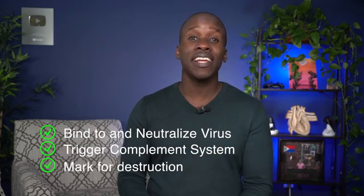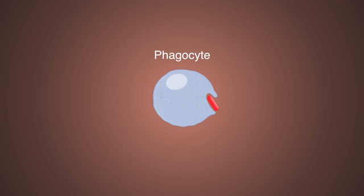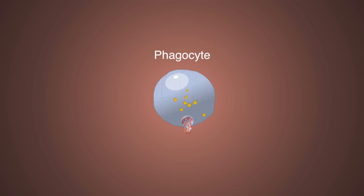Or number three, they can mark pathogens for destruction by other immune cells, such as phagocytes. These phagocytes will just come into the area and start eating stuff up. This entire process is known as the humoral response, and it's instrumental for keeping you safe from the West Nile virus and many other pathogens.